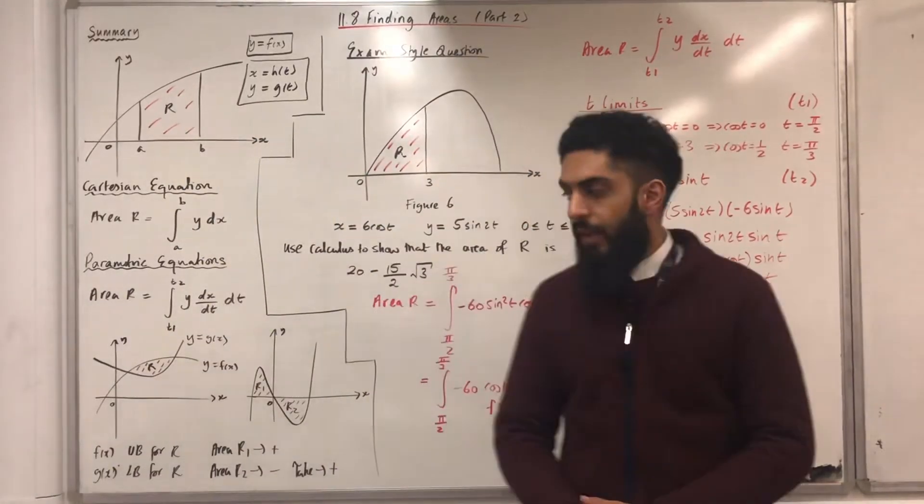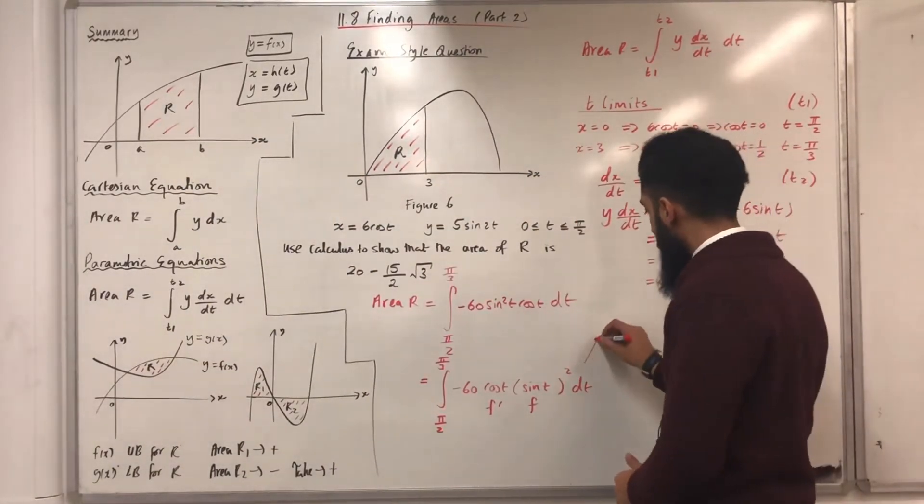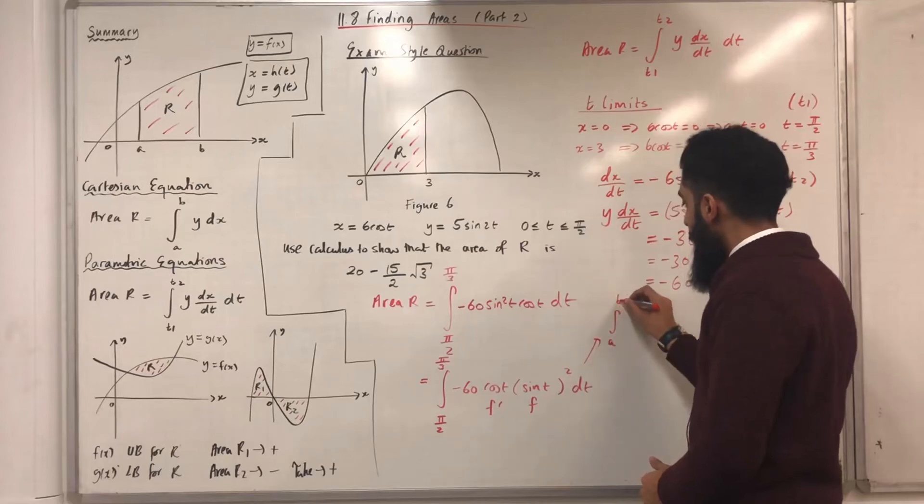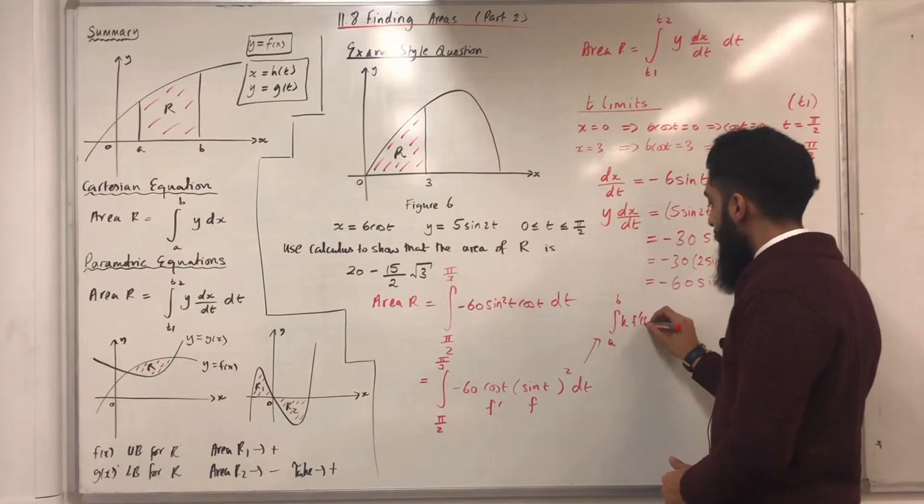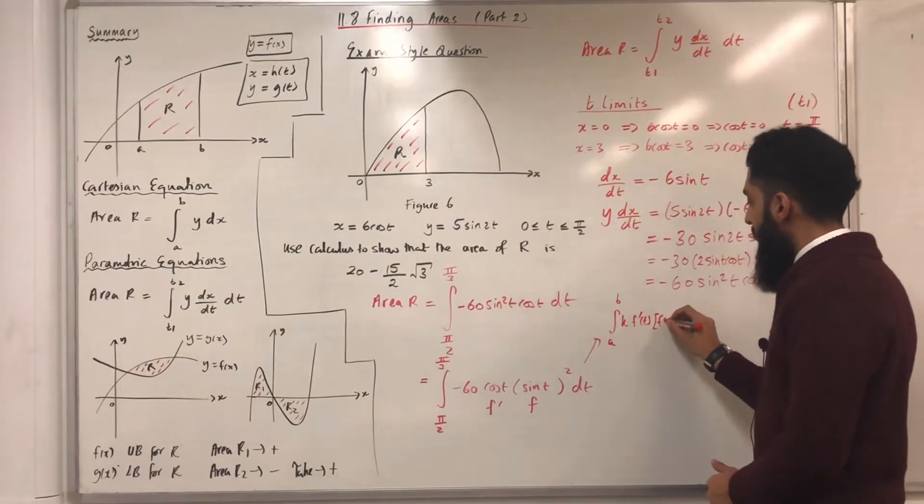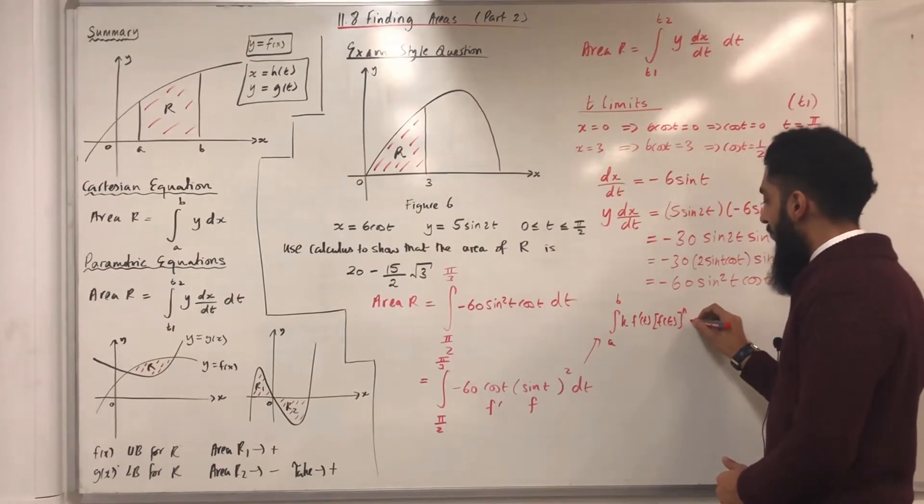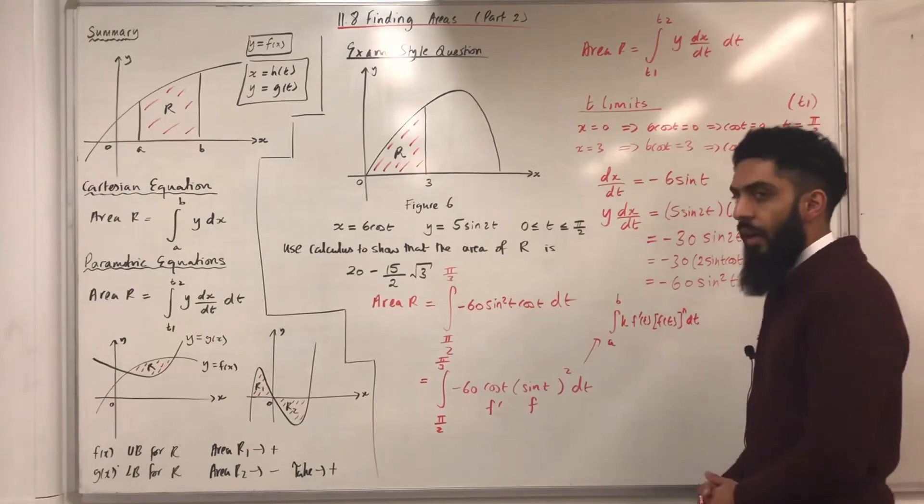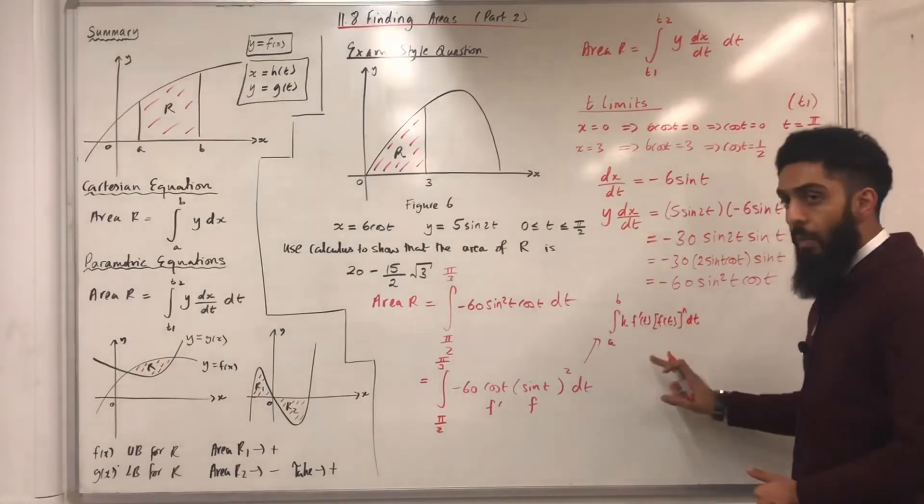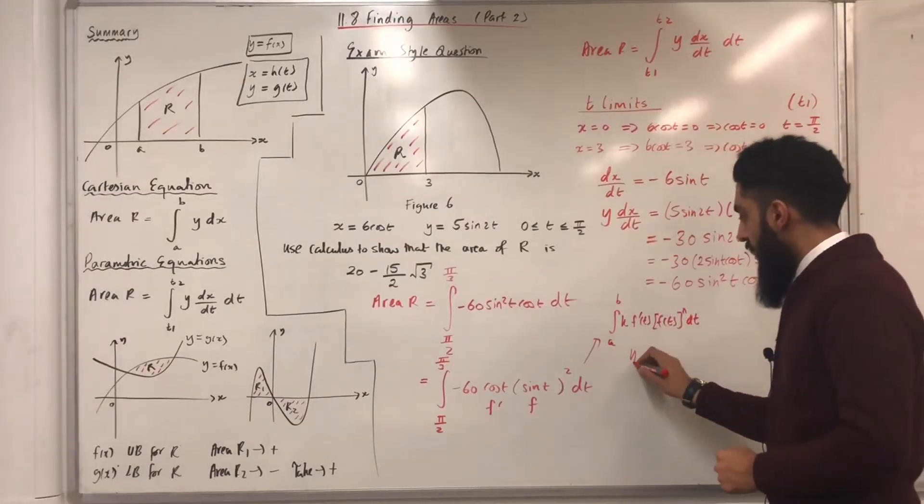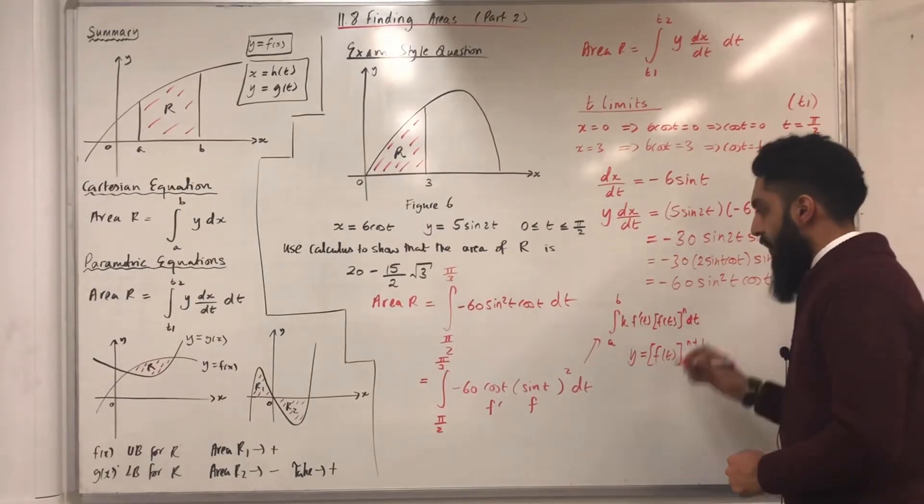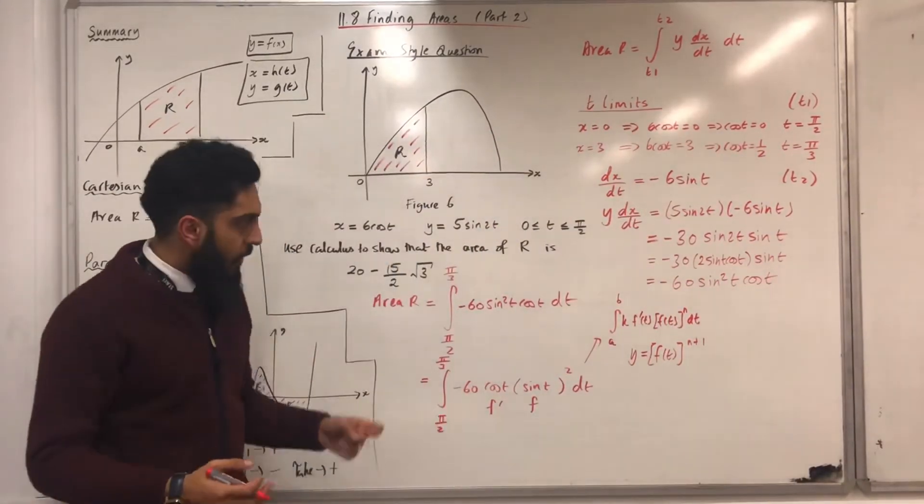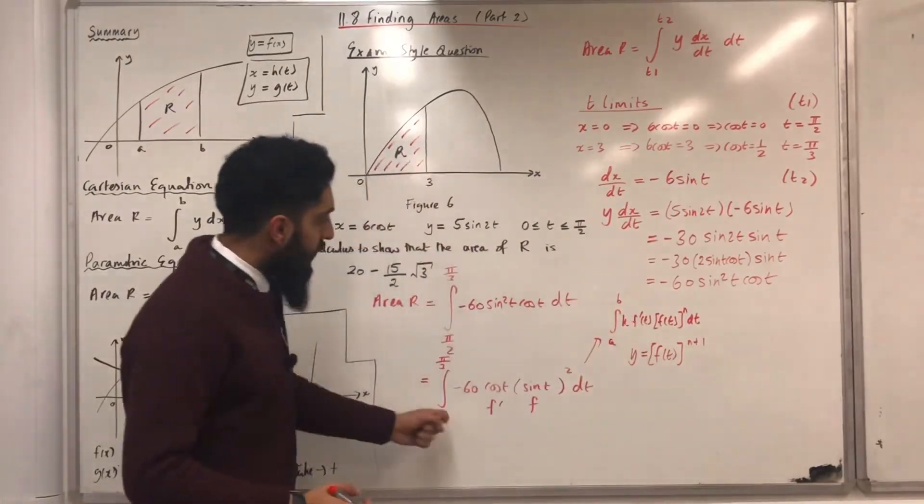And that form is as follows: the integral from a to b of k f dash of t, f of t in square brackets to the power n dt. Now, when you have this particular form, you need to try y equal f of t in square brackets to the power n plus 1. So, I'm going to be using the reverse chain rule to integrate this.